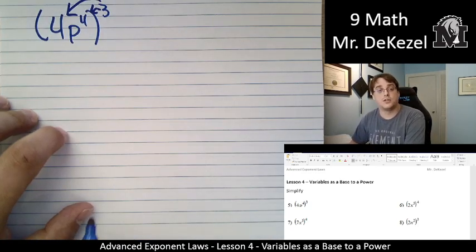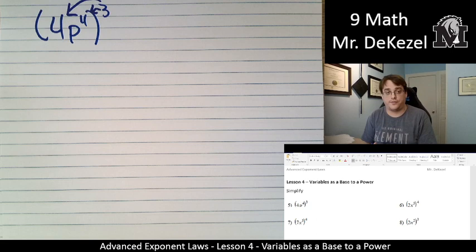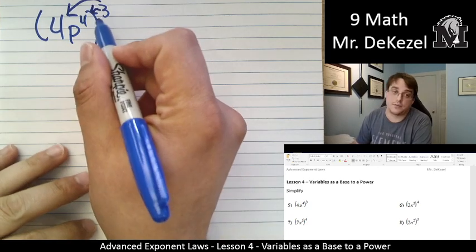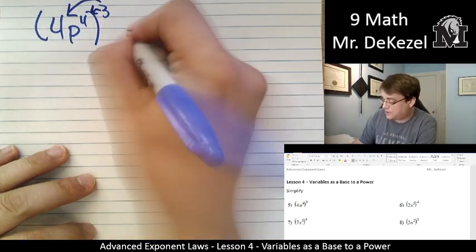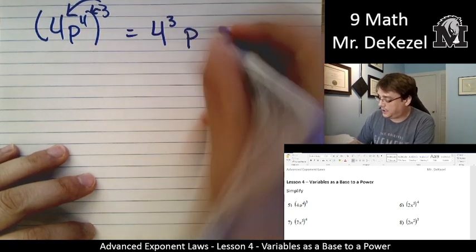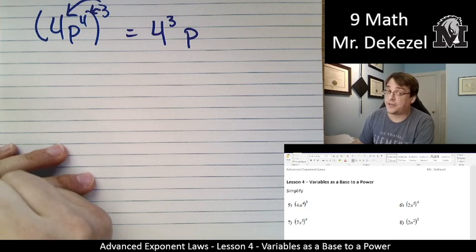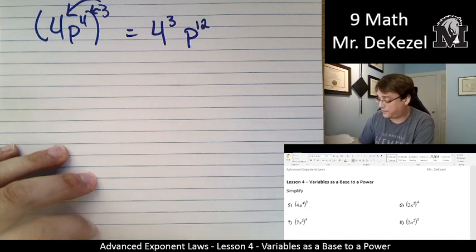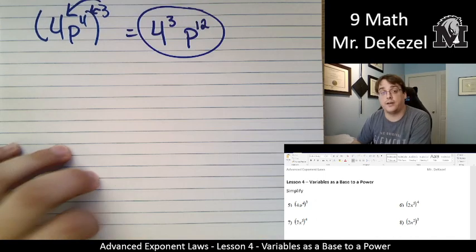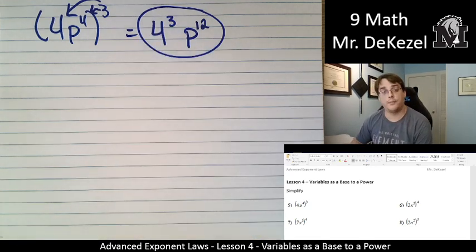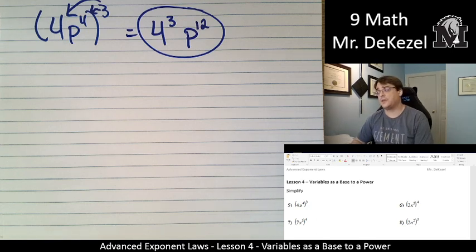We are going to then apply the exponent through and it is going to apply to both this term and this term. We're not going to solve these exponents, we're just going to be simplifying them as much as we can. We are going to apply this three exponent into both of these, so this turns into four to the power of three and p, well when we have an exponent of exponent we multiply, so this is p to the power of 12. That would be our final answer.